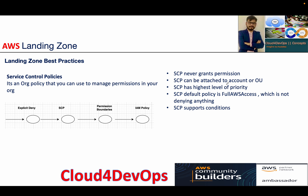If you see the flow, it happens in a way that first it will search for an explicit deny. Then it goes to SCP — whatever policy you define as part of your org or account structure. Then it goes to the permission boundaries, and finally what kind of policy you are applying to that particular role, user, or principal.